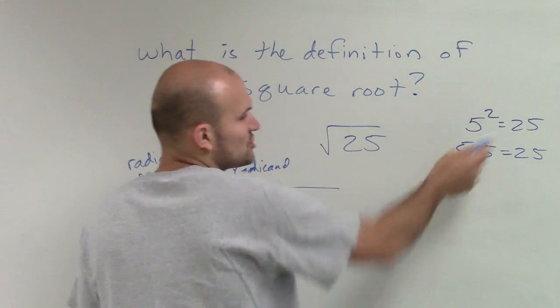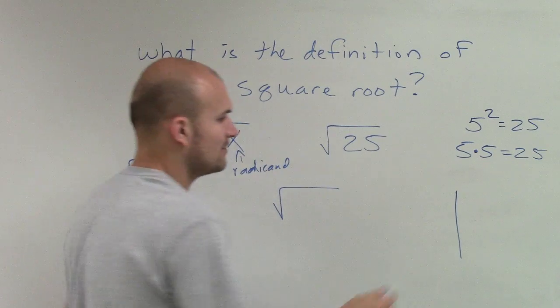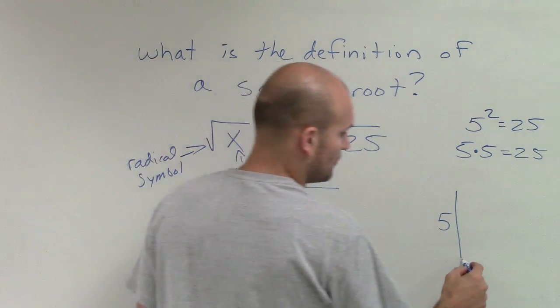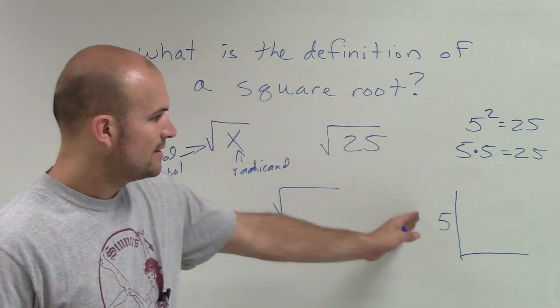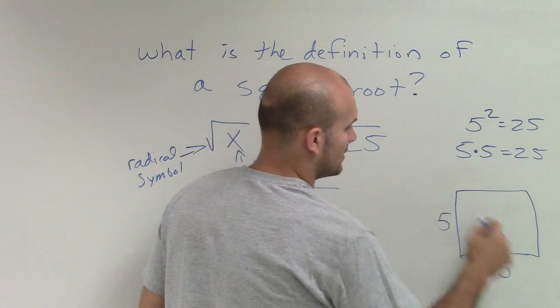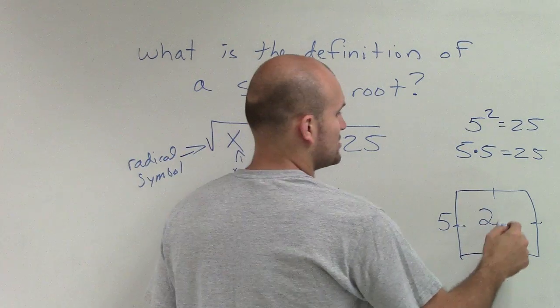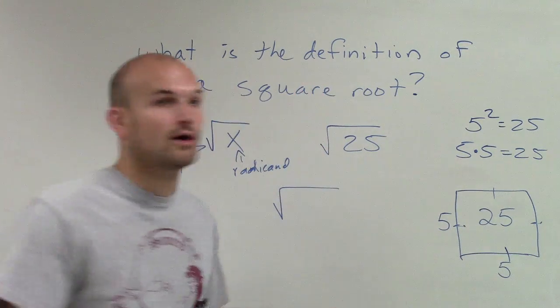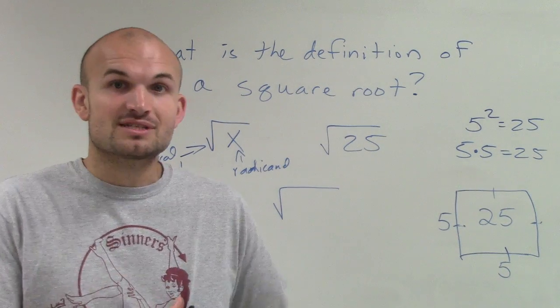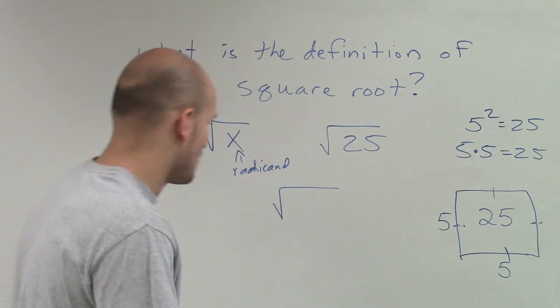When we think about squaring, we think about it as area of a square. If I said here's 5, and then I multiply by another 5, the reason why we call it squaring is because 5 times 5 creates a square. The area is what 5 squared is. That's why we call it squaring. When we're taking the square root, what we're trying to find is the roots of that area of the square that give it its value or its area.